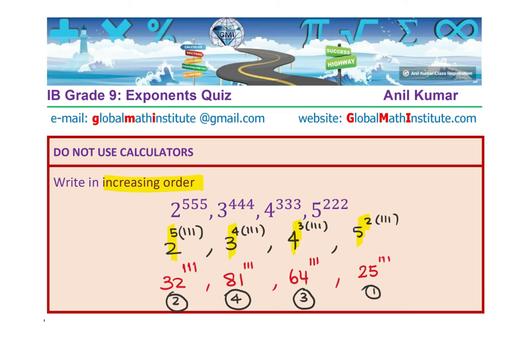And therefore, increasing order will be 5 to the power of 222, and then comes 2 to the power of 555, 4 to the power of 333, and then 3 to the power of 444. Make sense?